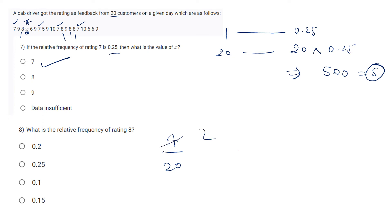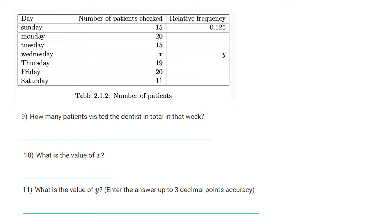A table shows day, number of patients checked, relative frequency. How many patients visited the dentist in total in that week? The relative frequency is 0.125. With this information we can calculate the total number of patients. If the total number of patients is 1 then the relative frequency is 0.125.